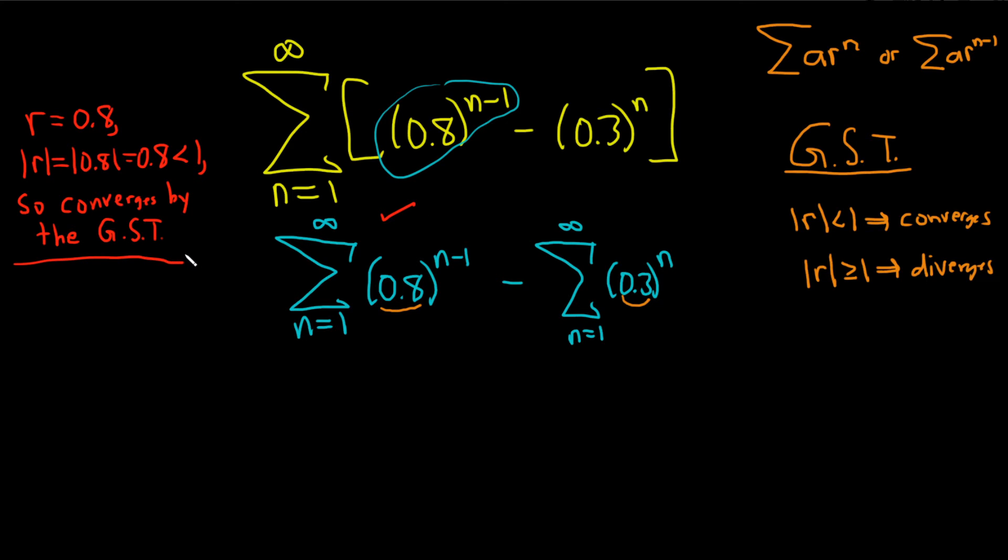Then we just do the same exact thing for the second one. So likewise for the second sum, r is equal to 0.3, the absolute value of r is equal to the absolute value of 0.3 which is 0.3 which is less than 1. So same thing, so converges by the GST.